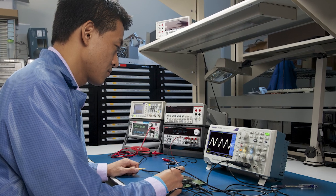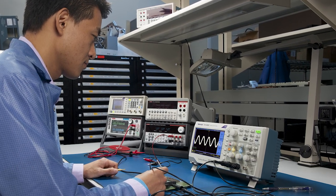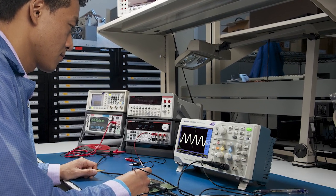Typically, a classroom lab setup will include instruments, circuit components, wires, and a printed lab manual.